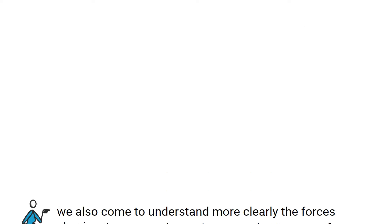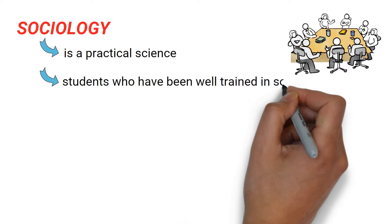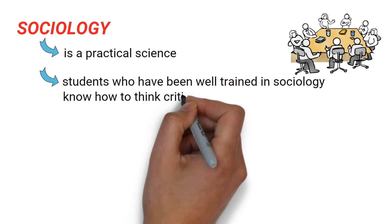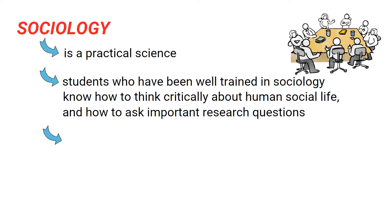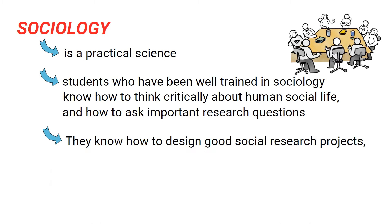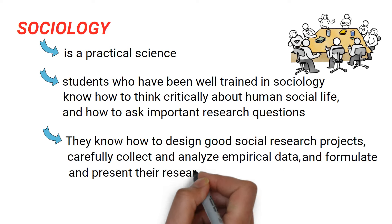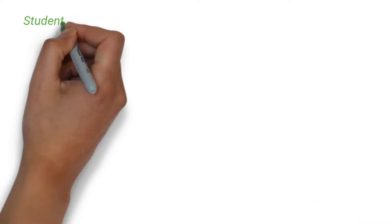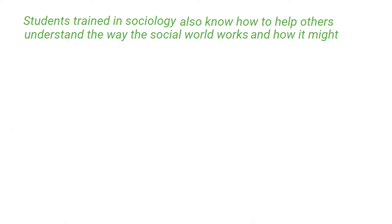It is also important to note that sociology is a practical science. Students who have been well trained in sociology know how to think critically about human social life, and how to ask important research questions. They know how to design good social research projects, carefully collect and analyze empirical data, and formulate and present their research findings. Students trained in sociology also know how to help others understand the way the social world works and how it might be changed for the better.